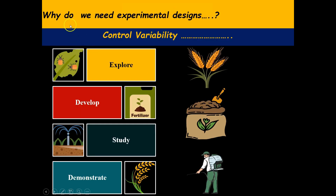We need experimental designs because we want to control variability by means of exploring, developing, studying, and demonstrating. As far as exploring is concerned, we usually explore different crop varieties, cultivation techniques, soil management practices, pest control matters, and so on, to identify new approaches or improvements — for example, exploring new genetic varieties resistant to disease or pests, or alternative irrigation methods to conserve water.